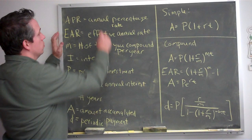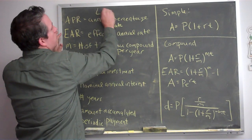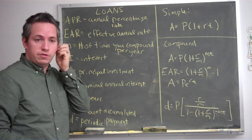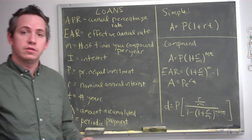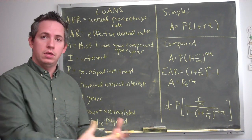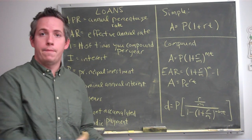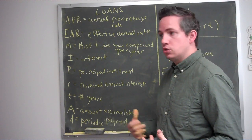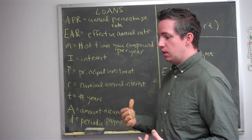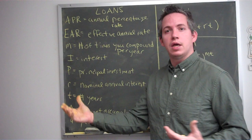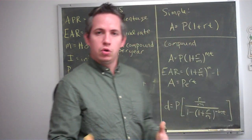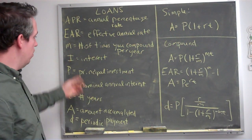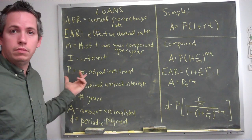Today we want to talk about loans. This looks very similar to savings, and that's because loans are just the other side of things. When you save money, you put money into the bank — the bank is then taking out a loan from you. So on the savings side of things, you save money, and somebody else is really taking out a loan. You'd expect the formulas and essentially the variables would all be similar.